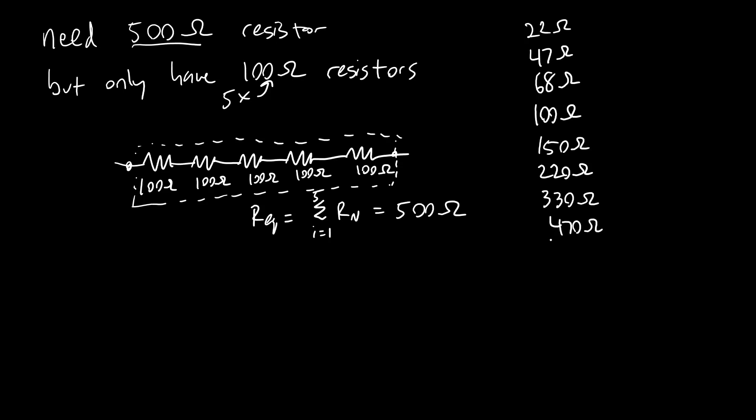So they're not always nice round numbers. But if you have a target value, you can add these up to get close to that value depending on what values you have available. You can also combine resistors in parallel, which we are going to discuss in the next video, which allows you to achieve an even greater range of values.